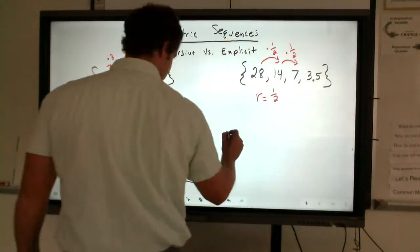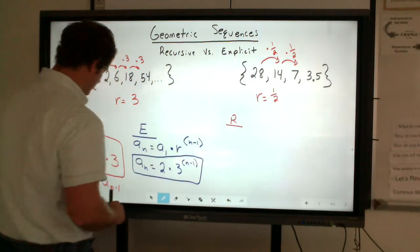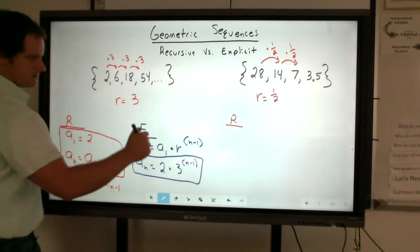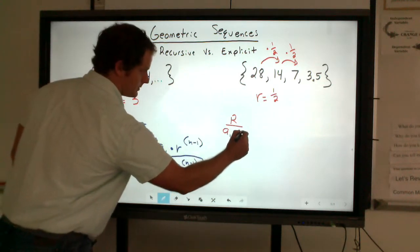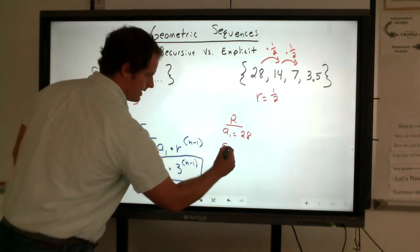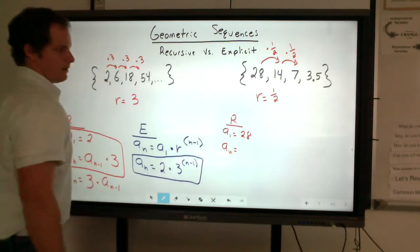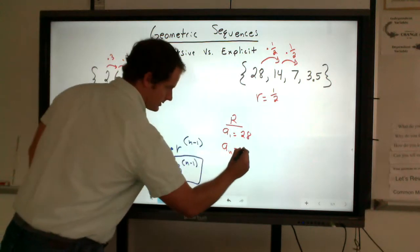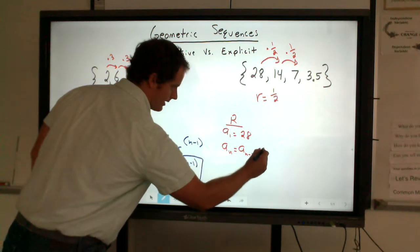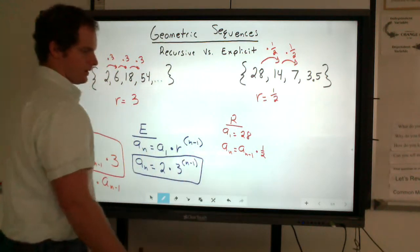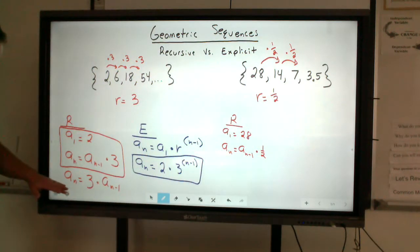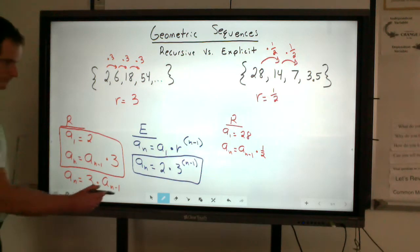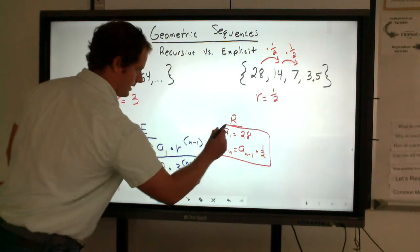If we want to write the recursive rule, we state that first term. In this case, our a sub 1 is going to be 28. Any nth term, we'll look at the previous term and multiply it by that one half. And again, if you wanted to, you could write a sub n equals one half times that previous quantity. So that's the recursive way to write that.